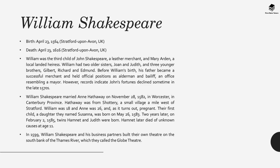Shakespeare was born in 1564 in Stratford-upon-Avon and died in 1616. He was a child of John Shakespeare, a leather merchant, and Mary Arden, a local landed heiress. He had two older sisters and three younger brothers. When older, he married Anne Hathaway — he was 18 and she was 26, and she was pregnant. Their first child was a daughter named Susanna, and two years later they had twins, though one died. In 1599, Shakespeare and his business partners built the Globe Theatre.